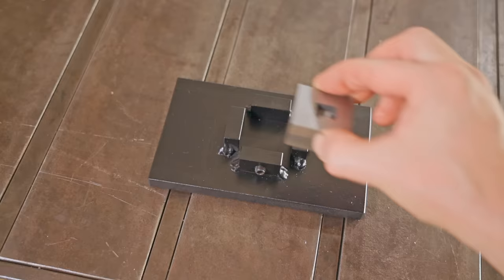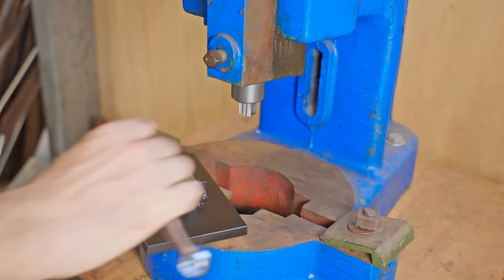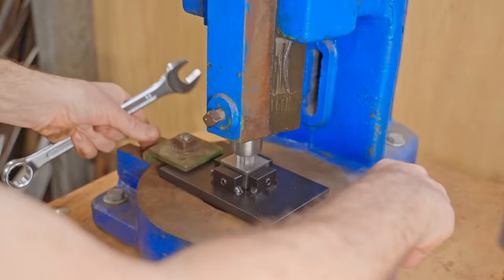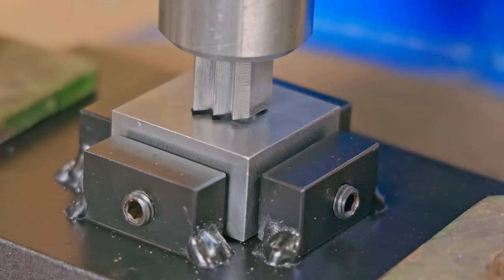The die is lifting slightly when I tighten it but I'll fix that later on. The punch and die need to be hardened but I couldn't resist trying it out on a piece of wood veneer.